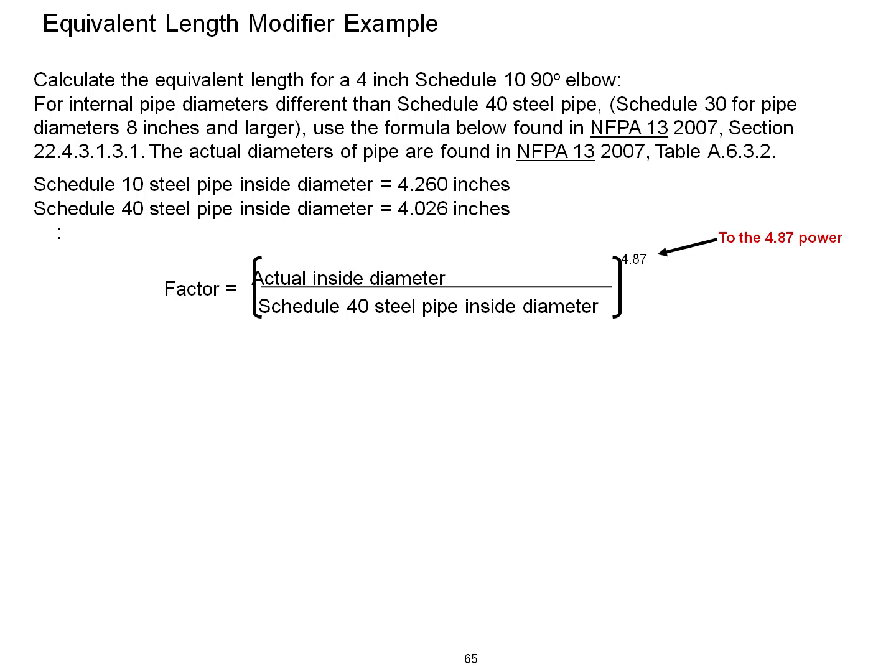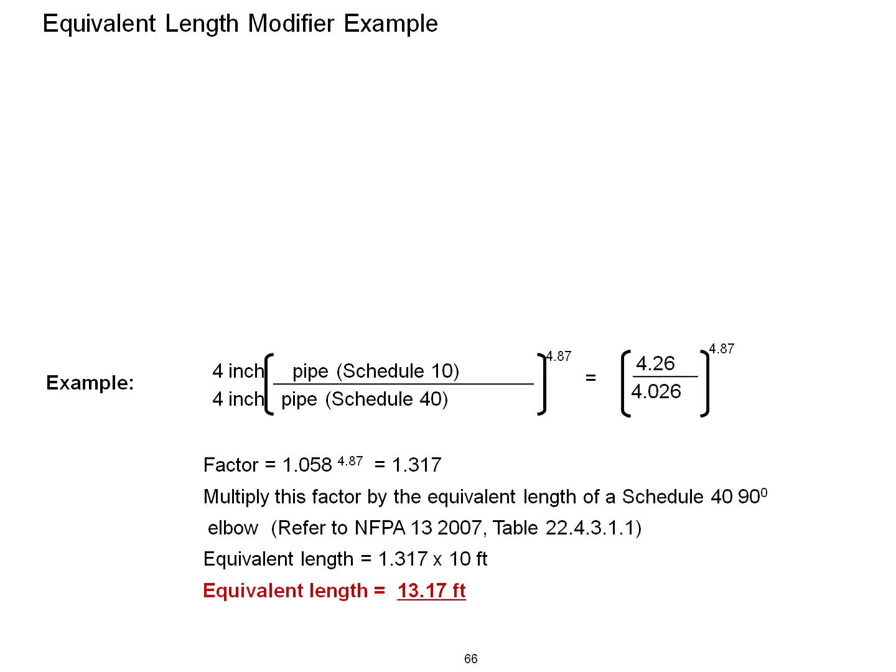The actual diameters of pipe are found in Table A.6.3.2. Continuing our example, for 4 inch pipe, Schedule 10 is divided by 4 inch pipe Schedule 40 to the 4.87 power. Therefore, we have 4.26 for Schedule 10 and 4.026 inches for Schedule 40. We divide 4.26 by 4.026 to the 4.87 power. 1.058 to the 4.87 power equals a factor of 1.317. Multiply this factor by the equivalent length of a Schedule 40 90 degree elbow.